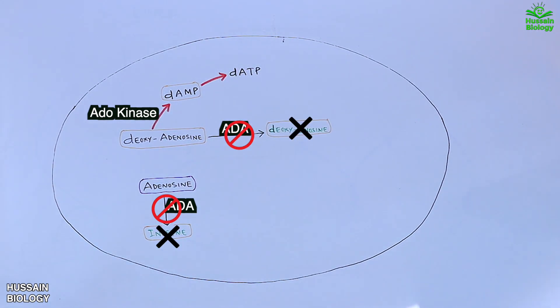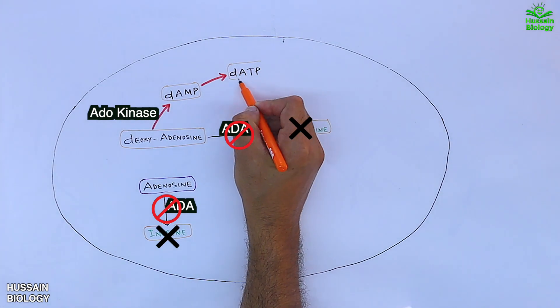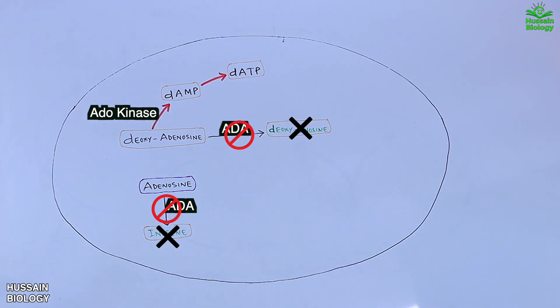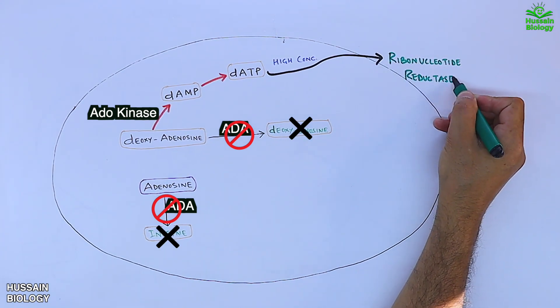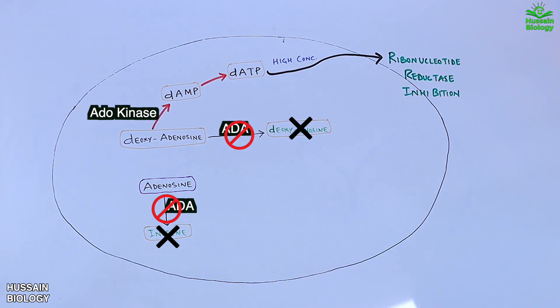This dATP accumulates in the cell which proves to be fatal for the cell. First of all, it drives ribonucleotide reductase inhibition, and we know this ribonucleotide reductase enzyme is very important for DNA synthesis.